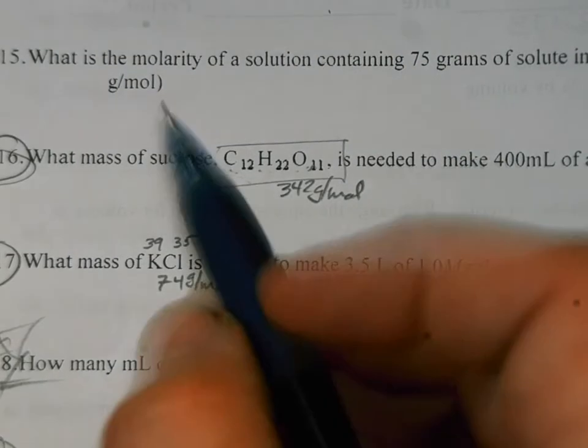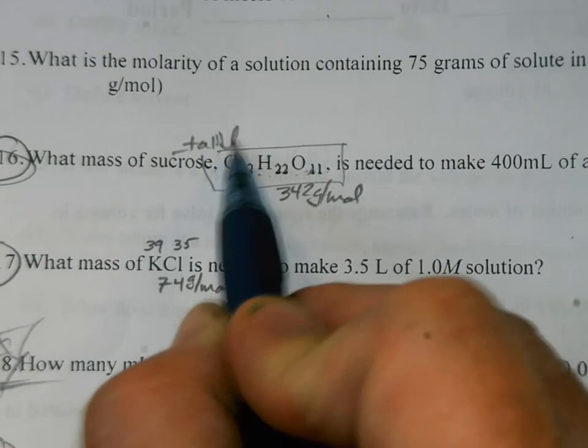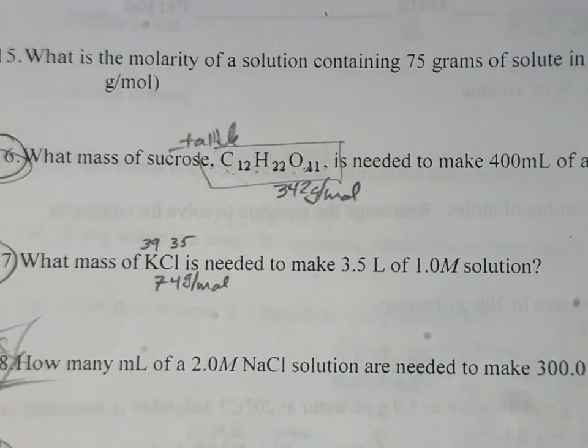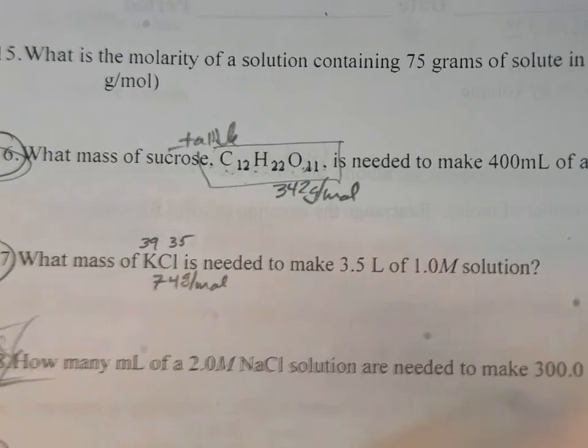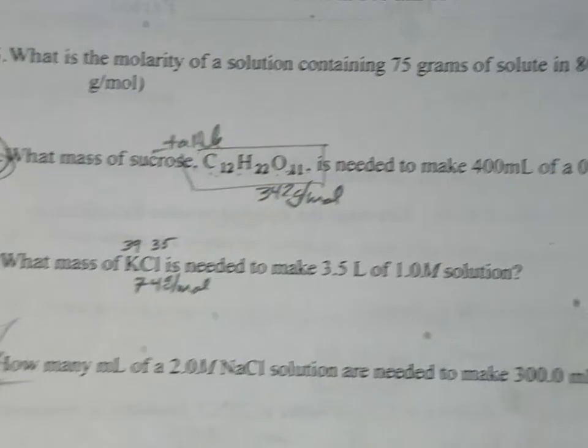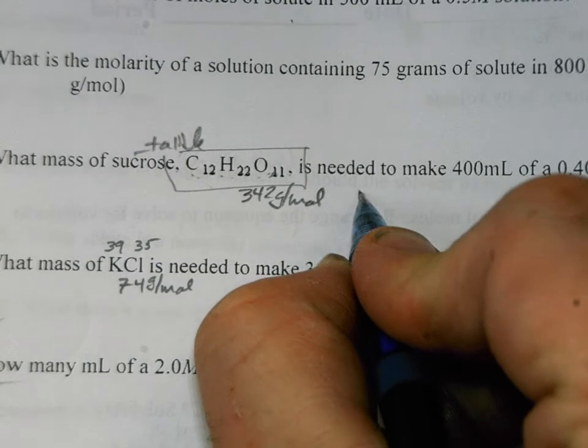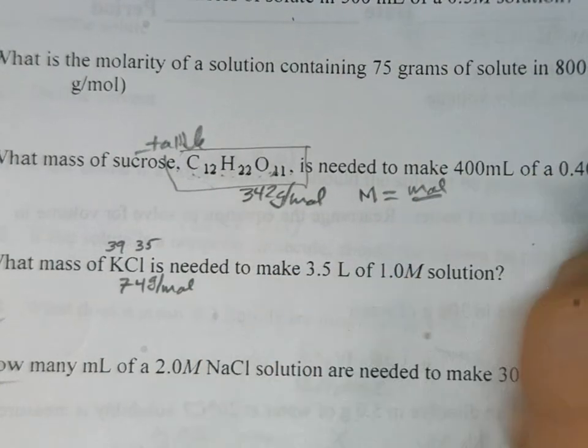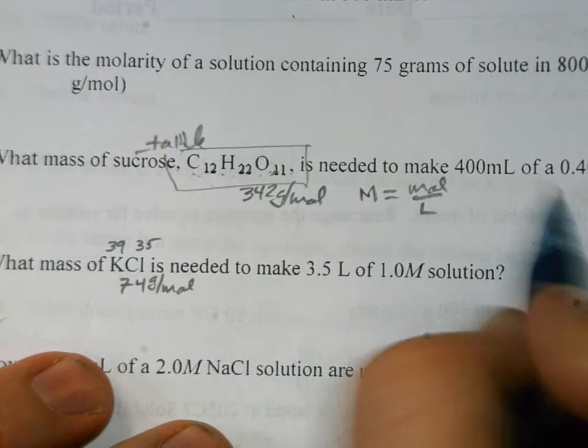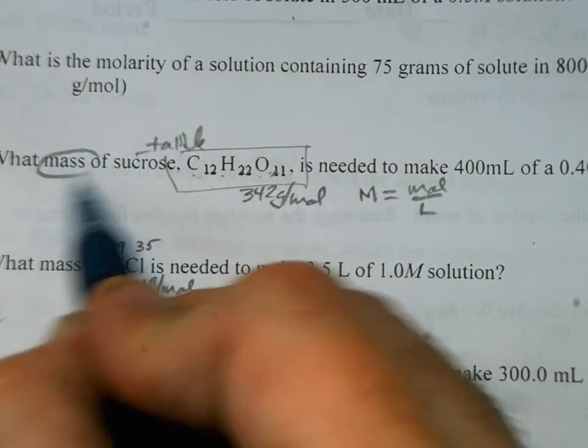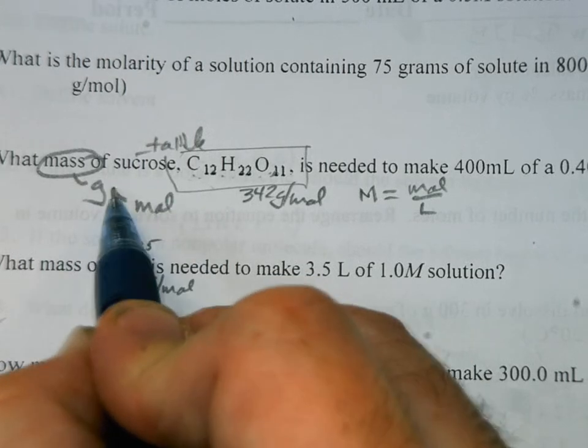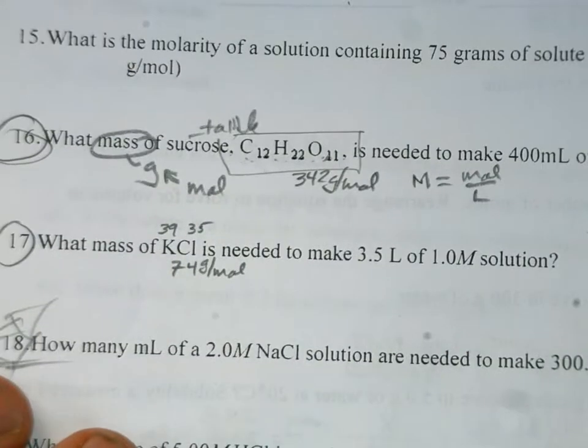Question number 16 is the next one we were asked to go over. And it asks you, what is the mass of sucrose? That's table sugar. What is the mass of sucrose needed to make 400 milliliters of a 0.4 molar solution? So on this one right here, we're going to set up our base equation once again. Please don't ever be afraid to use the base equation. Molarity, capital M, is equal to moles divided by liters. And in this problem, we want to know mass. So we are ultimately looking for grams. First, we've got to figure out how many moles of it. Then we'll convert the moles into grams.